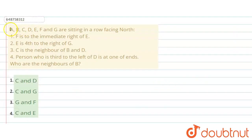The question says: A, B, C, D, E, F, G are sitting in a row facing north. F is to the immediate right of E. E is fourth to the right of G. C is neighbor of B and D. The person who is third to the left of D is at one of the ends. Who are the neighbors of B? Here are 4 options given.